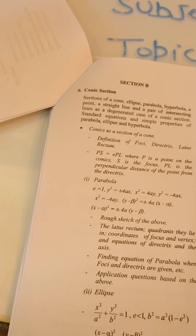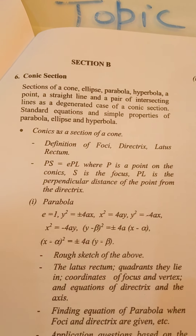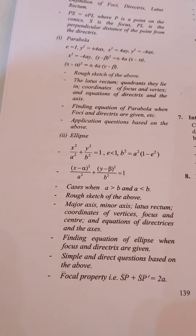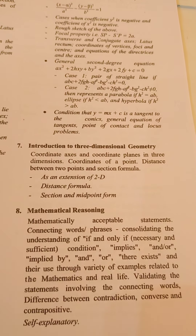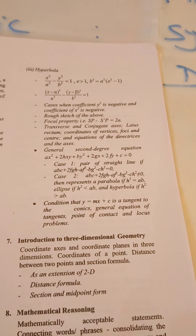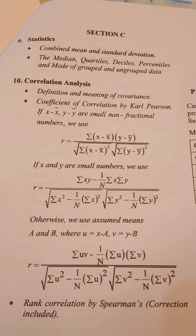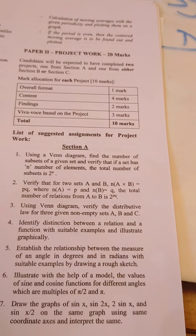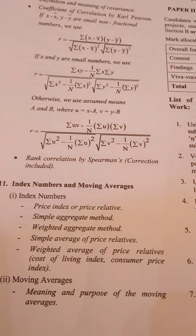That was Section A. Now for Section B, we are going to cover the conic section part including parabola and ellipse. And for Section C, the topics go up to moving average and index number. You can note these down.